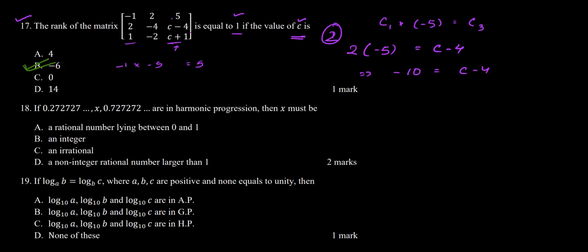Now moving on to question number 18. It says: if 0.272727... , x, and 0.727272... are in harmonic progression, then x must be... So we have a repeating decimal 0.2727..., a middle value x, and another repeating decimal 0.7272..., and we need to find x if these three numbers are in HP.